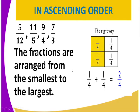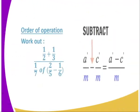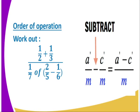So the fractions are arranged from the smallest to the largest. Whereby, so in ascending order, we are going to get 5 over 12, 11 over 5, 9 over 4, and our last one is 7 over 3. Now, we are going to have order of operations.